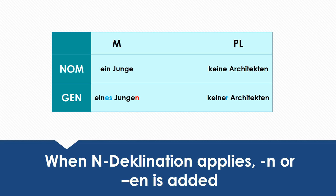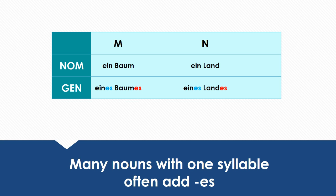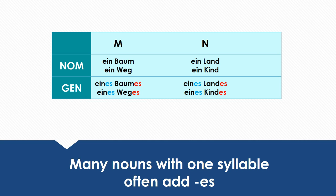When the rules of N-declination apply we have to add an N or an EN. Such as in these examples: ein Junge in the nominative case becomes eines Jungen in the genitive case. Keine Architekten becomes keiner Architekten in the genitive. Ein Mensch changes to eines Menschen. Keine Kunden changes to keiner Kunden. Many nouns with only one syllable often add an ES — for example, ein Baum becomes eines Baumes, and ein Land becomes eines Landes.